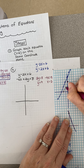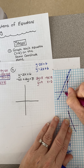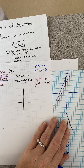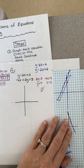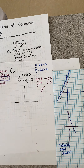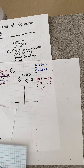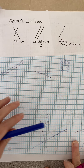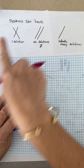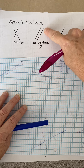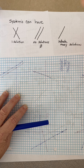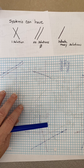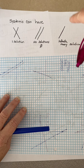I connect those points to draw the line. What do you notice about these lines? They're parallel - they're never going to intersect. So for this answer, there's no solution. To summarize: when you have a system, you're either going to have one solution because the lines intersect somewhere, no solution because the lines are parallel, or infinitely many solutions because it's the same line on top of each other.